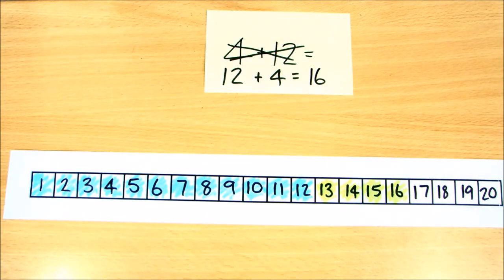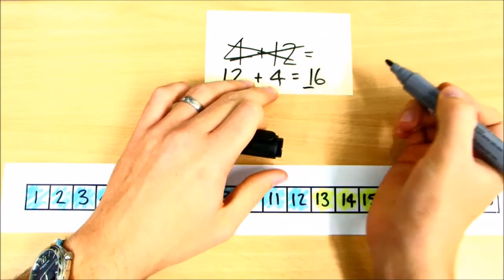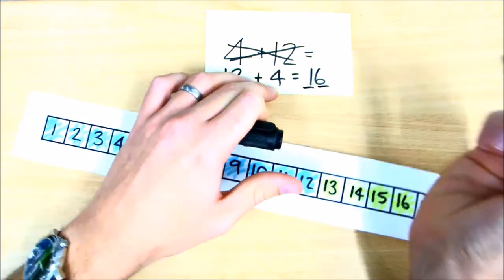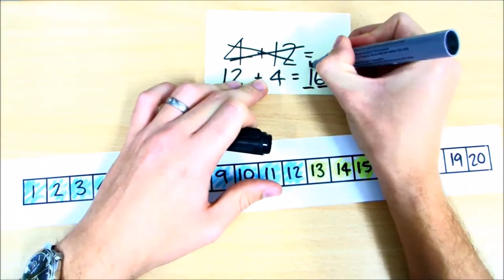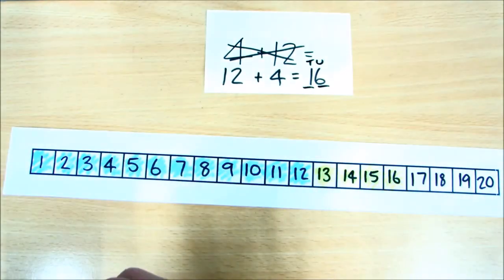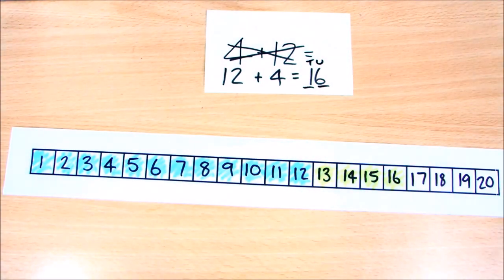And that's all there is to that one. It's worth remembering though that obviously the number sixteen is one ten and six units. So that's our tens and units in there. Sixteen is one ten and six units.